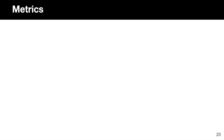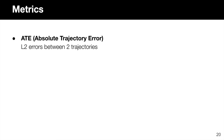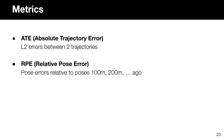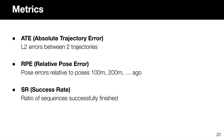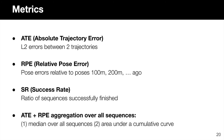We evaluate our system on this novel SLAM benchmark. We use classic SLAM metrics such as absolute trajectory error and relative pose error, as well as measuring the success rate. To aggregate the metrics over dozens of sequences, we also report the median as well as the area under a cumulative curve for these metrics.